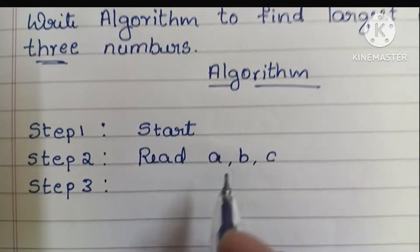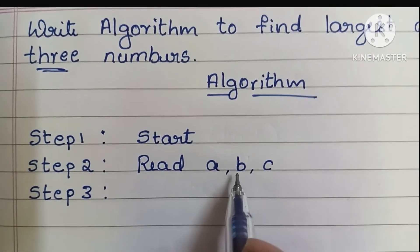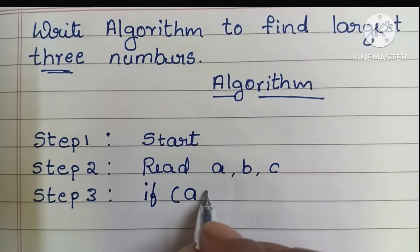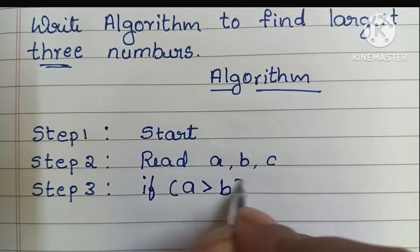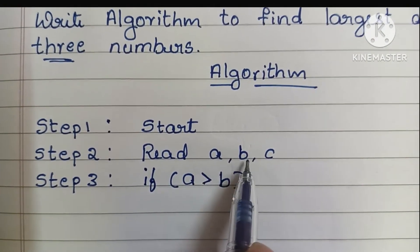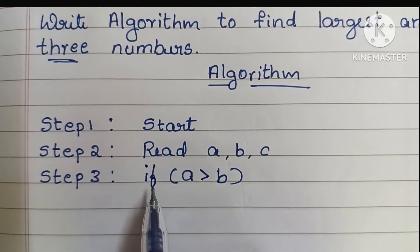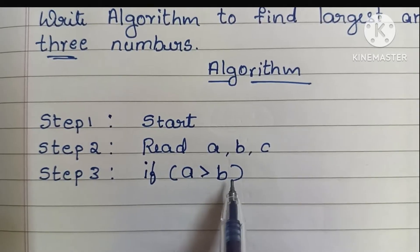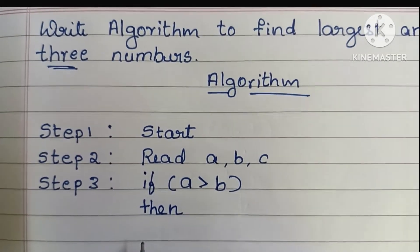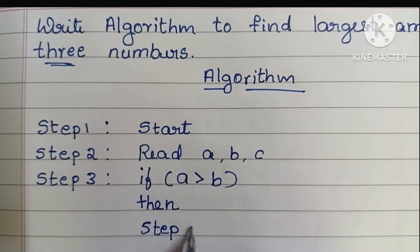Step 3: to find the largest among three numbers, first we have to check the largest between the first two numbers, that is a and b. If a is greater than b, this condition is true, we have to execute step 3.1.